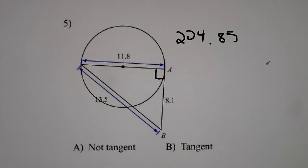And then we got to do 13.5 squared, which gets you 182. 204 clearly does not equal 182. So that means it's not tangent.